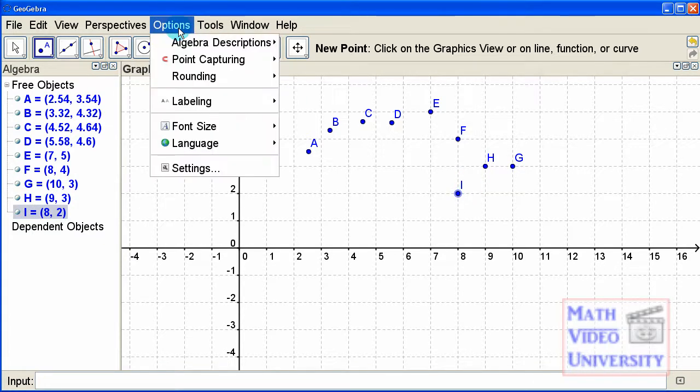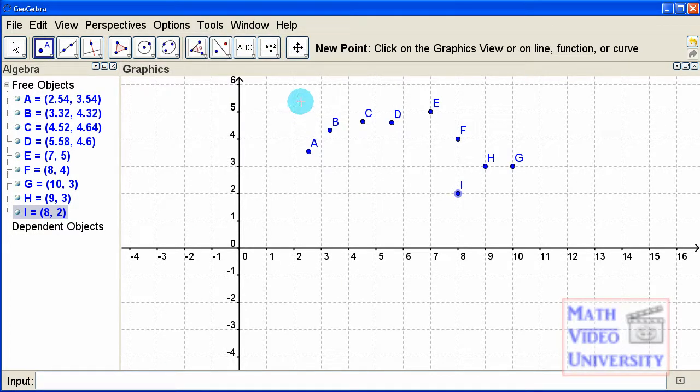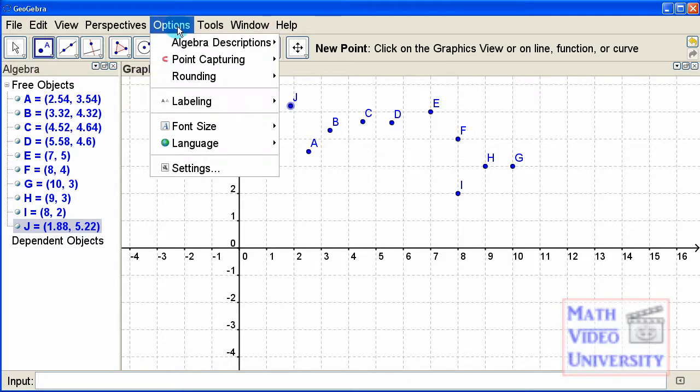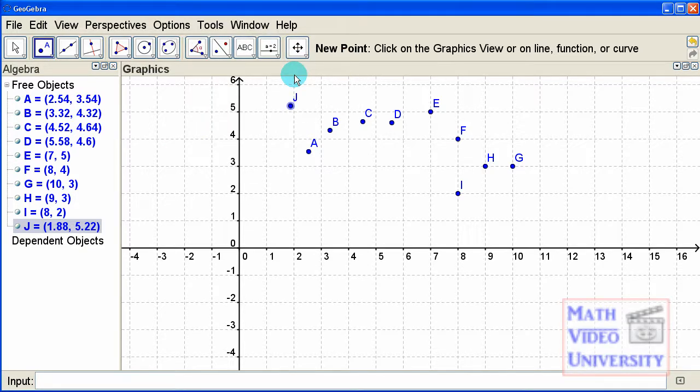Third option here is you can take a look at Point Capturing where you can turn it off and then when you click you can position this as close to an intersection point as you wish. So those are three of the options that I use and I'm going to go back up here and go back to Point Capturing and put it on the way I usually do it, which is Snap to Grid.